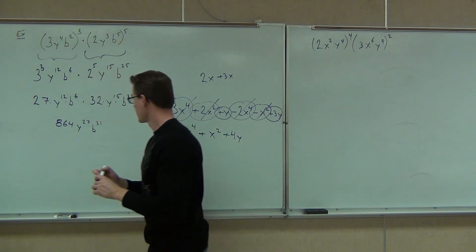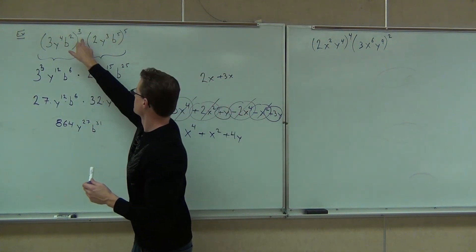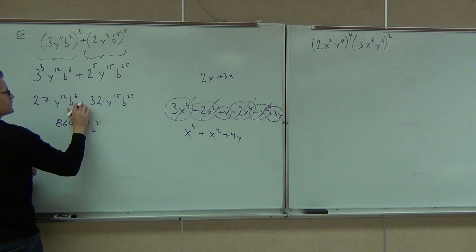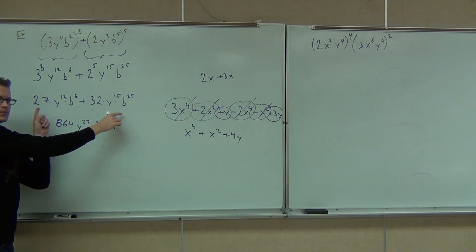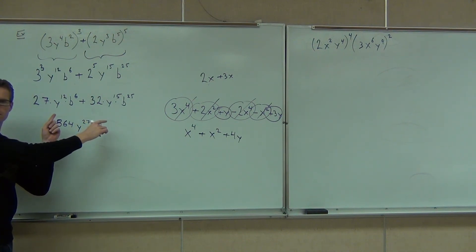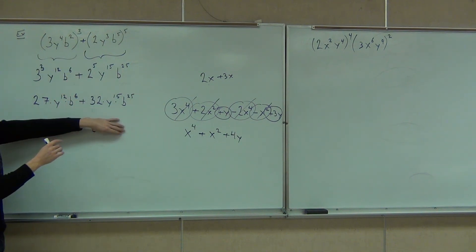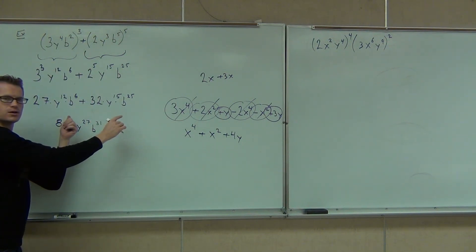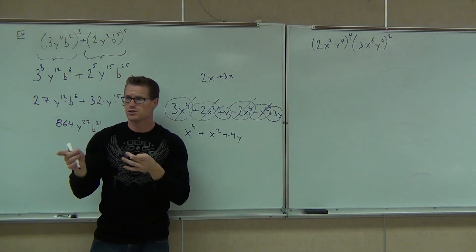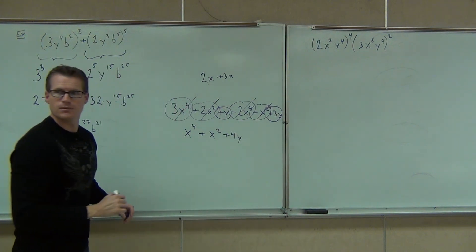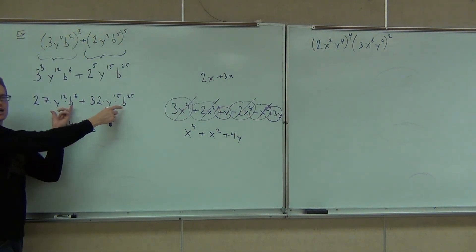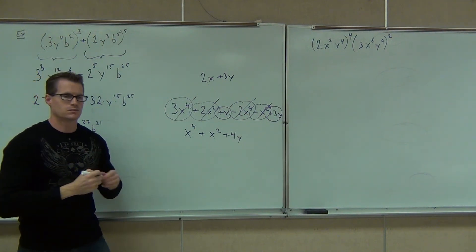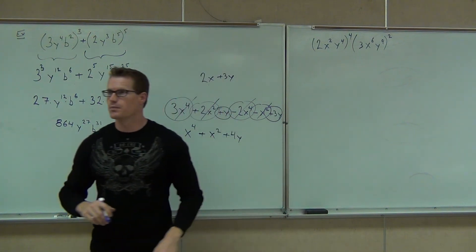What if inside the parentheses there was addition instead of multiplication? That's a great question. If it was addition, that's where you'd stop — there'd be nothing else you could do. If I'm not multiplying, I stop there. There'd be no like terms to combine — they're completely different. You wouldn't be able to combine them whatsoever. It'd be like trying to combine 2x and 3y — you can't get 5 of anything. Multiplication is very different from combining like terms.